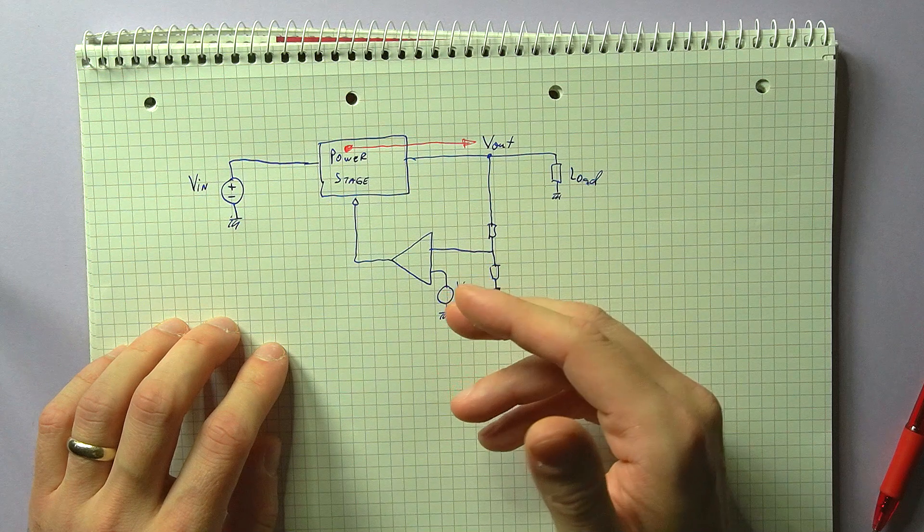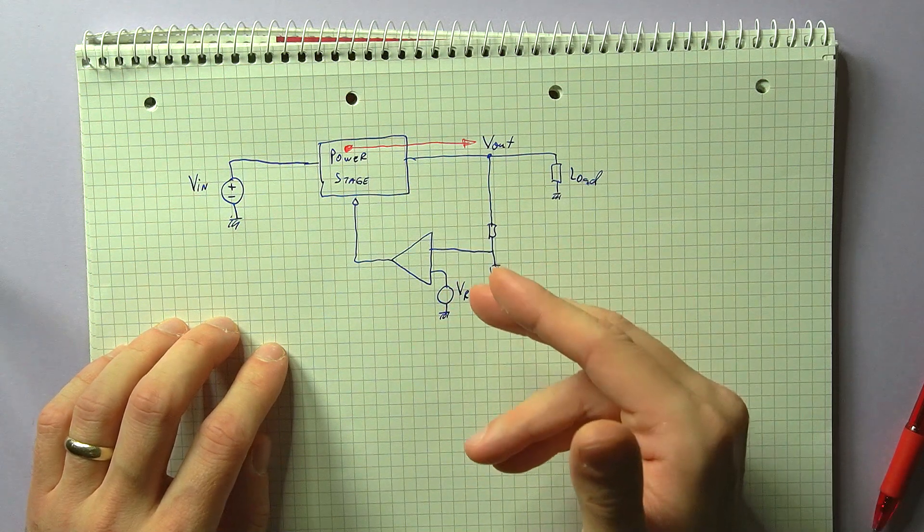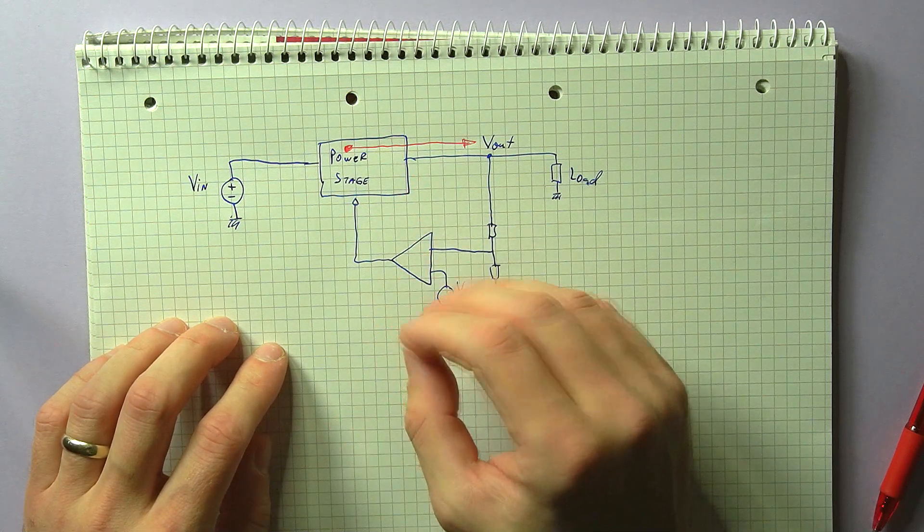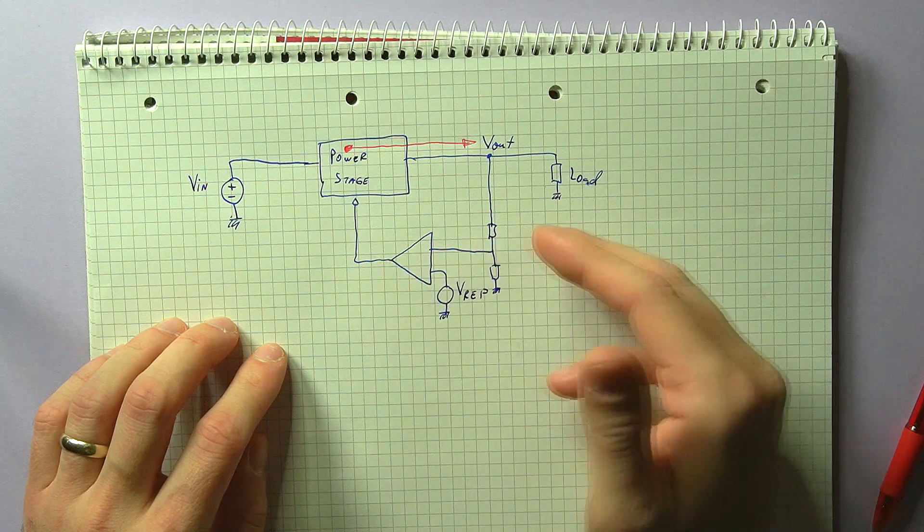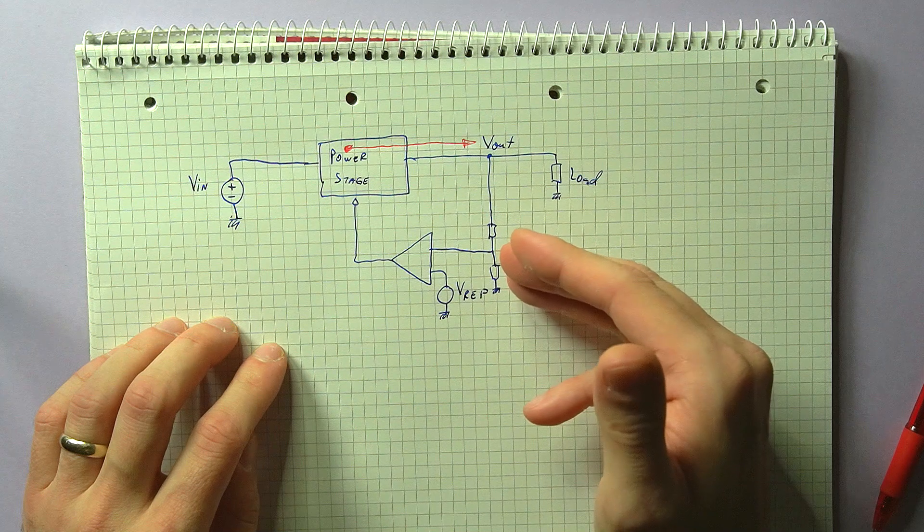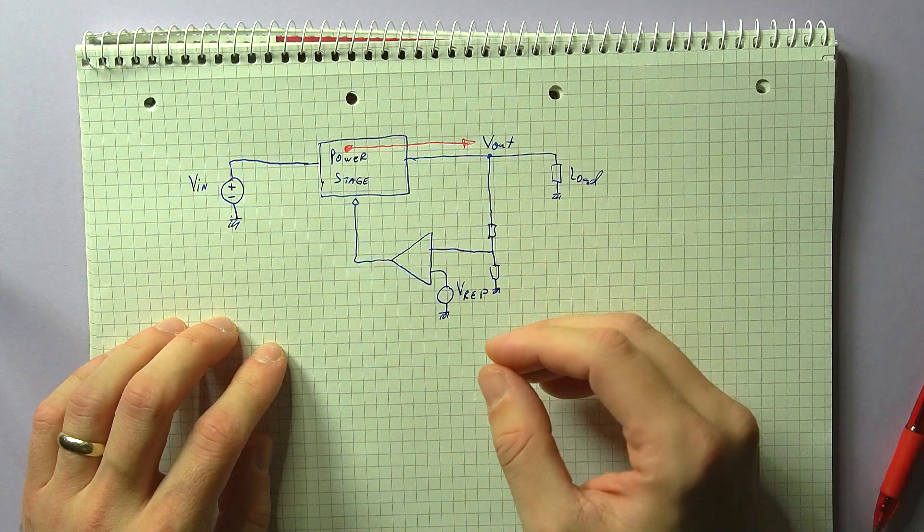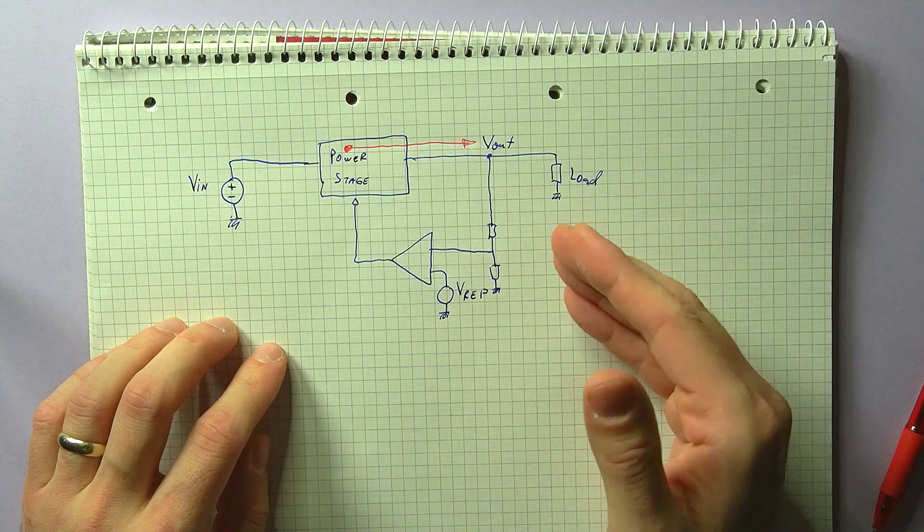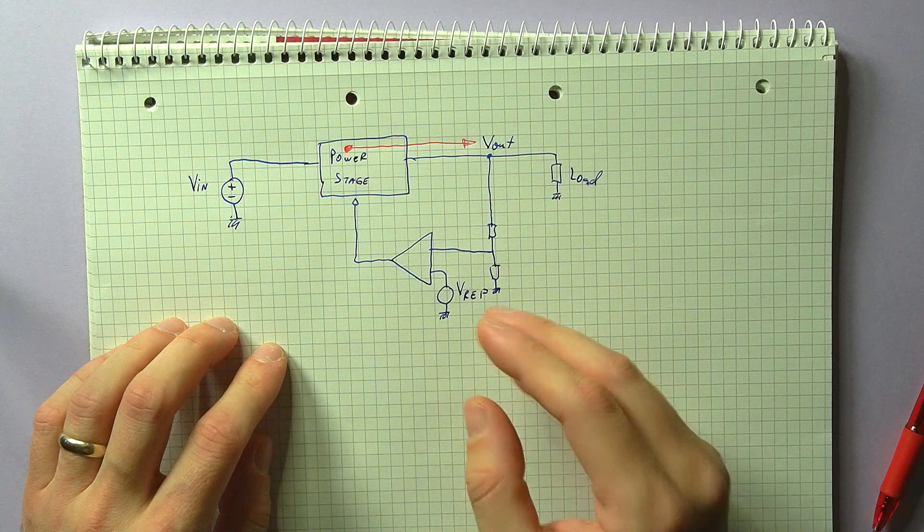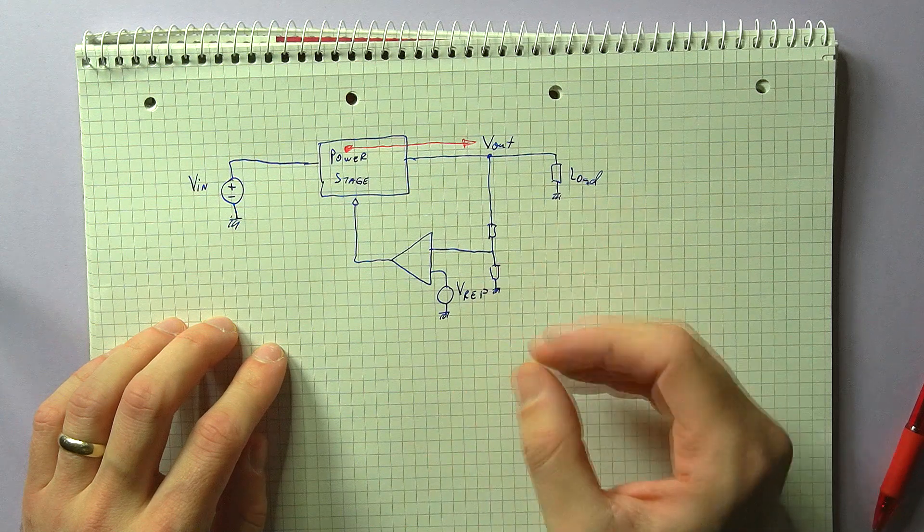So the power supply type known to be the most noisy is the switching converter. Here noise is mainly generated in the power stage. Because of the switching action of the converter, the output will not be a clean DC value, but rather there will be some amount of ripple because of the chunky way in which energy is transferred through the circuit. This energy transfer is usually occurring at high frequency, so the switching frequency, but noise is also observed at higher multiples. And then you will also have various ringing associated noises.